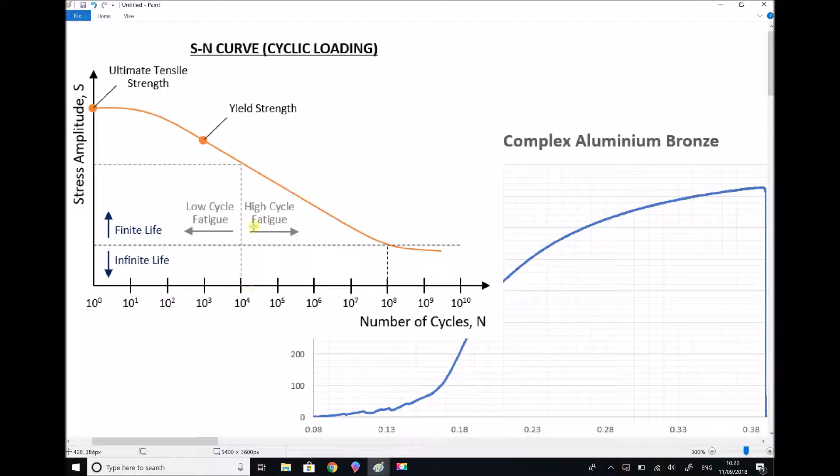Now typically high cycle fatigue is defined as number of cycles above 10 to the 4 or 10,000 and anything less is considered low cycle fatigue.